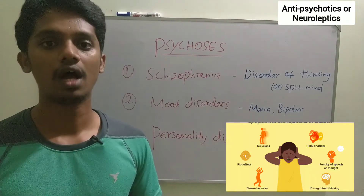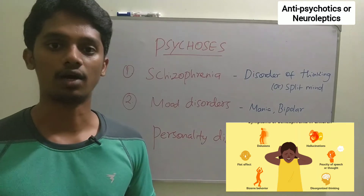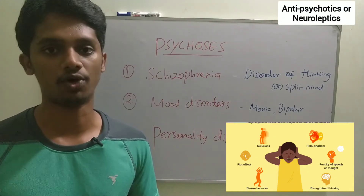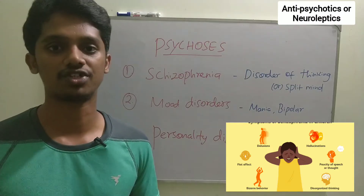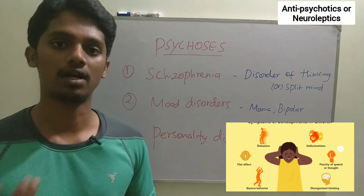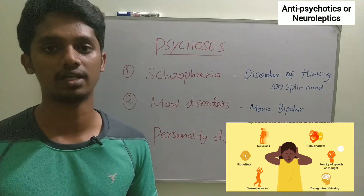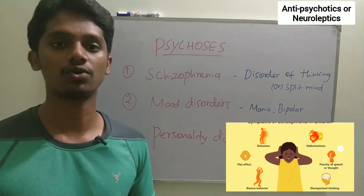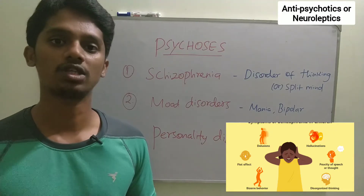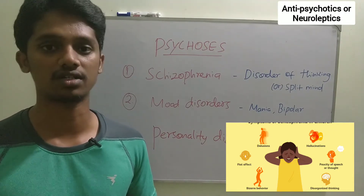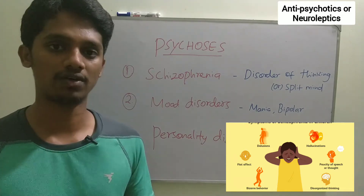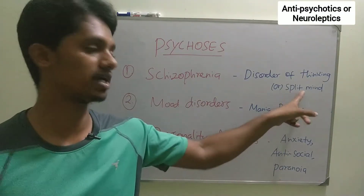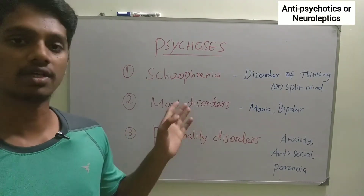Schizophrenia is a disorder of thinking. It involves delusions and hallucinations, along with a lot of aggression and irrational thinking. Social bonding is also affected. This group of disorders is schizophrenia — if you want to say, split mind or split personality disorder. This is a type of disorder.